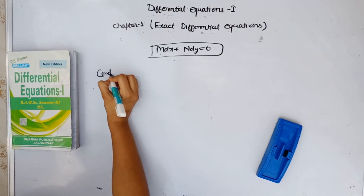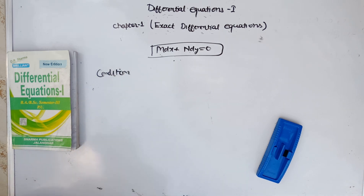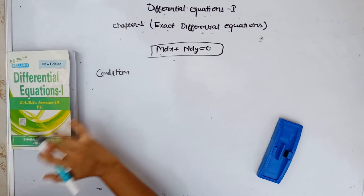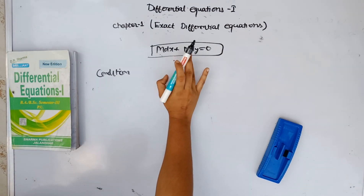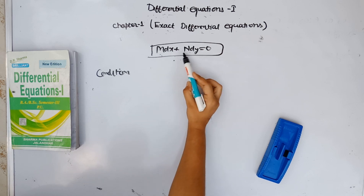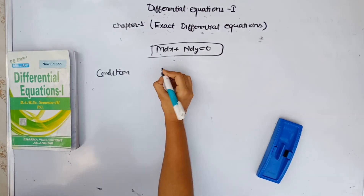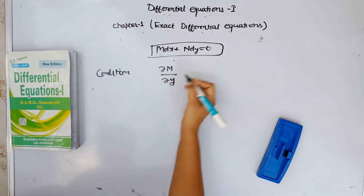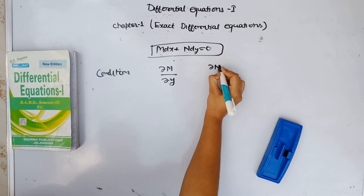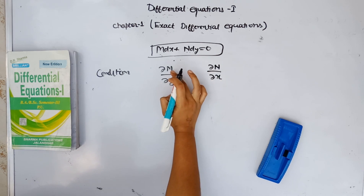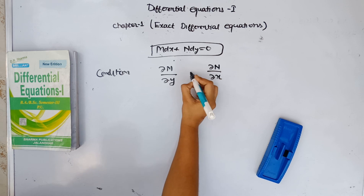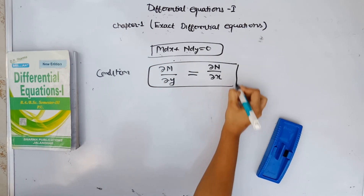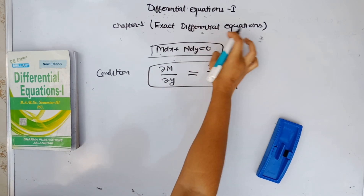So this is the condition for us. If we have a sum or a question, we compare it first of all to M dx plus N dy equal to 0. Then we compare it to get the values of M and N. Then we take the partial derivative of M with respect to y, and the partial derivative of N with respect to x. If partial derivative of M with respect to y equals partial derivative of N with respect to x, then the given equation is an exact differential equation.